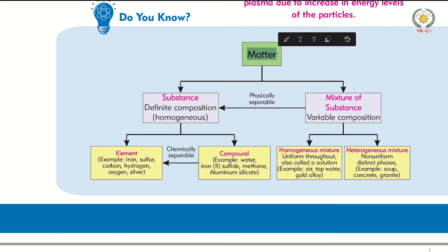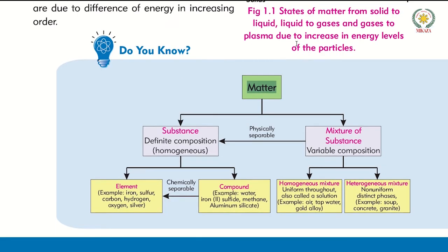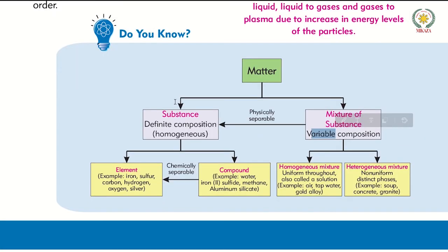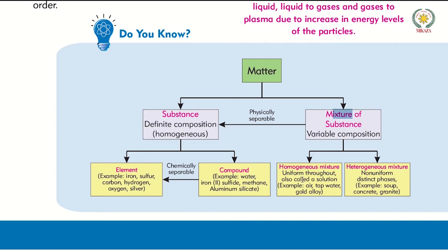First of all, matter. Matter is anything that occupies space and has a mass, because all things are made of matter. Matter is divided into two types: substance — which is homogeneous and one type of thing — and mixture, which is made of different types of things.